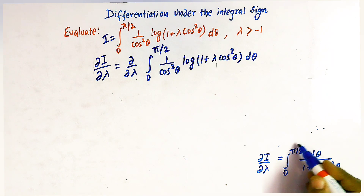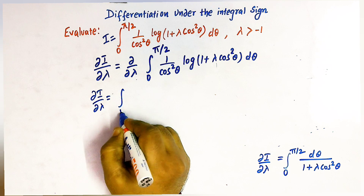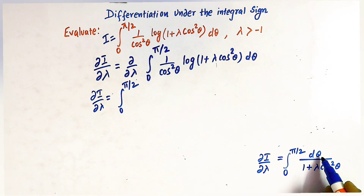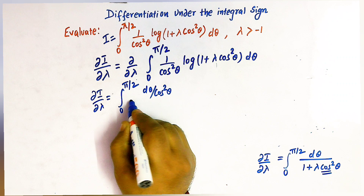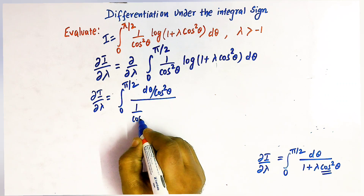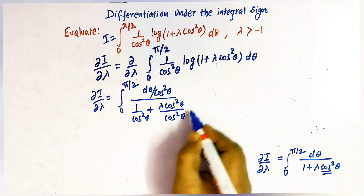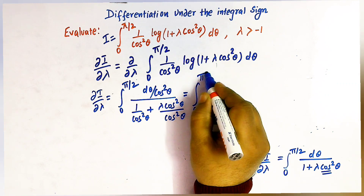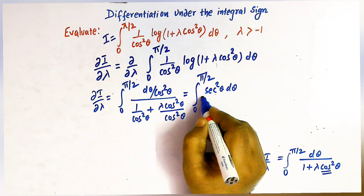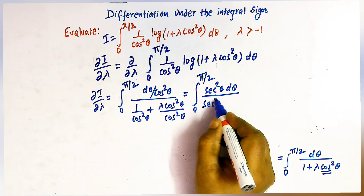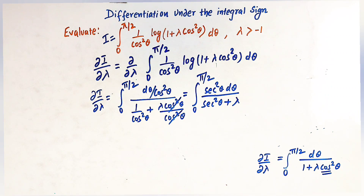Now we need to evaluate this integral. We divide the numerator and denominator by cos²θ, giving sec²θ dθ in the numerator and (1/cos²θ + λcos²θ/cos²θ) = sec²θ + λ in the denominator. So cos²θ terms cancel, and we can write the integral from 0 to π/2 of sec²θ/(sec²θ + λ) dθ.